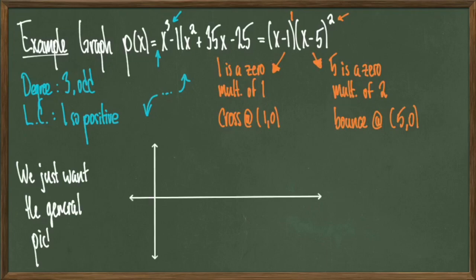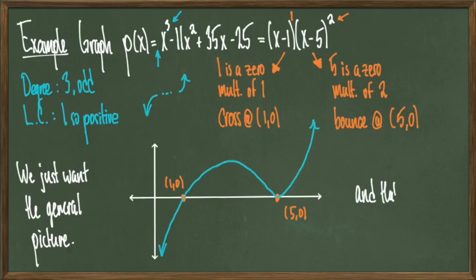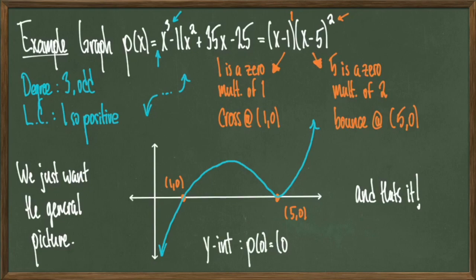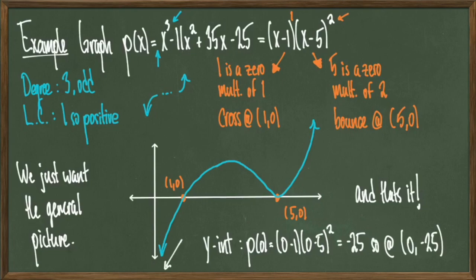I'll draw my axes and plot x-intercepts at (1, 0) and (5, 0). Following the end behavior, I start from the bottom left, cross at (1, 0), then bounce at (5, 0), and continue upward — just as the end behavior dictates. That's really all there is to graphing these: determine the end behavior, determine how you interact with the x-axis, and fill in the dots. For completeness, the y-intercept is found by evaluating at x = 0, giving the point (0, -25), which falls off screen.